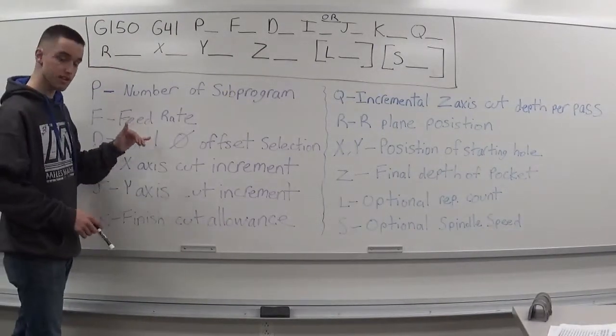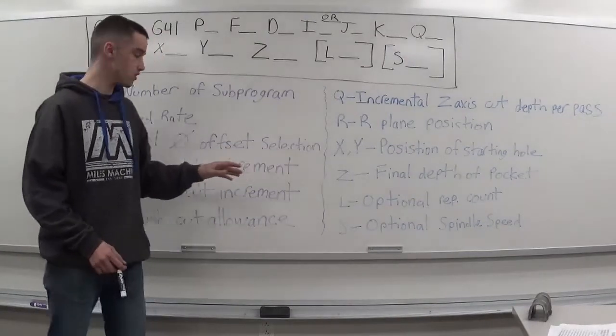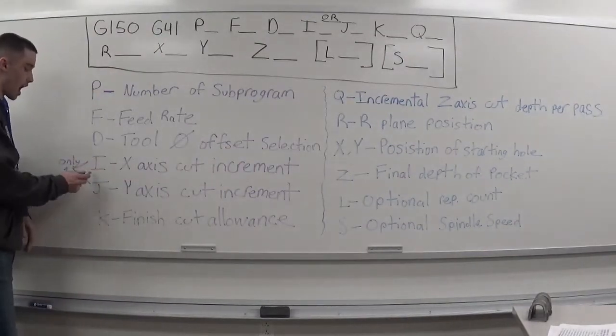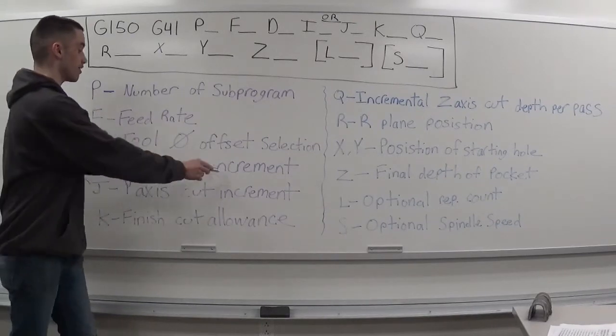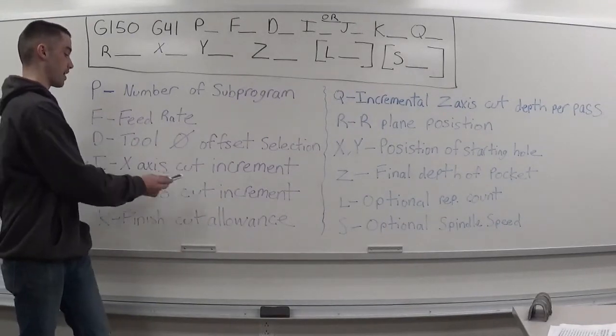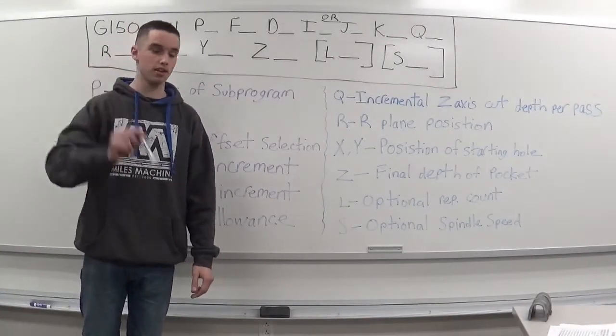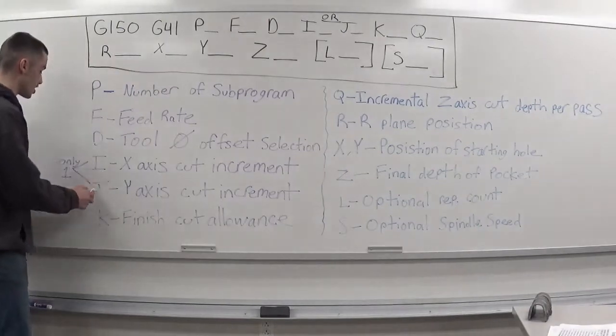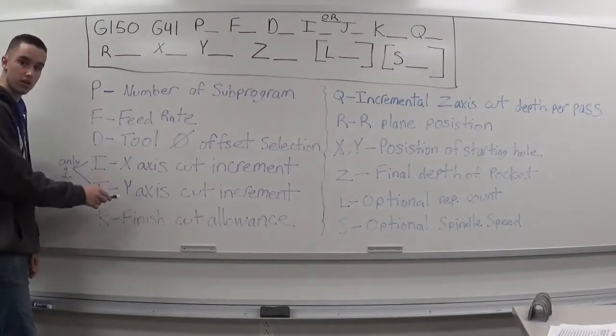Your F is your feed rate. Your D is your tool diameter offset selection. Then you have an I or a J. Your I is your X axis cut increment and your J is your Y axis cut increment, meaning if you want to be cutting in the X or if you want to be cutting in the Y. With the I or J you can only have one though, you can't have both.